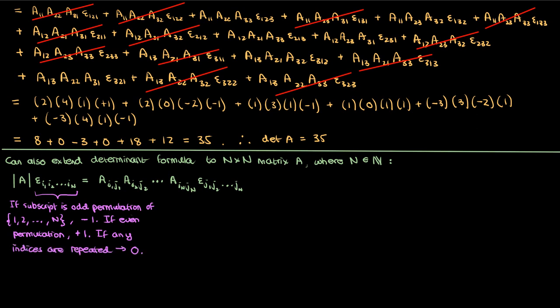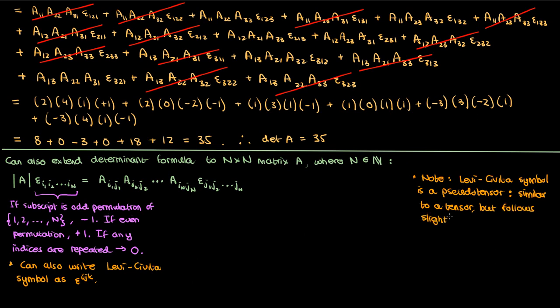Another note I'll make is that it's also possible to write the Levi-Civita symbol with contravariant indices where the indices are up top rather than at the bottom. However, I should note that the Levi-Civita symbol is not a tensor. It's something called a pseudotensor. A pseudotensor is similar to a tensor that we defined in earlier videos but follows slightly different transformation rules. Another name that people sometimes use for a pseudotensor is a tensor density, so you might encounter that in your readings.